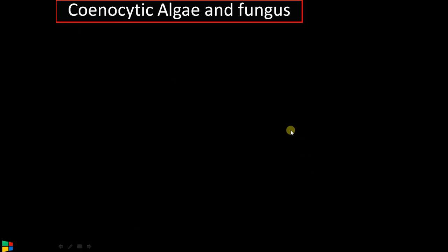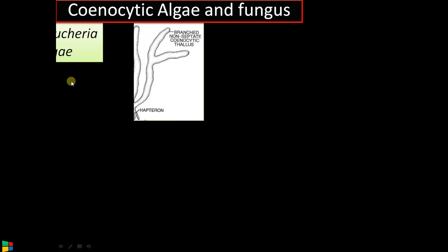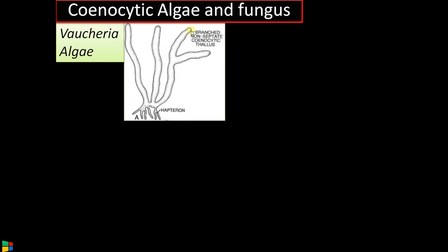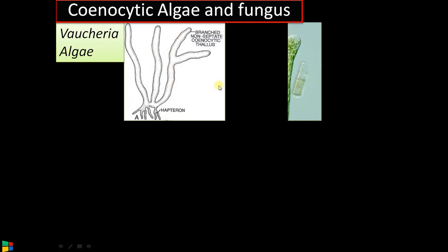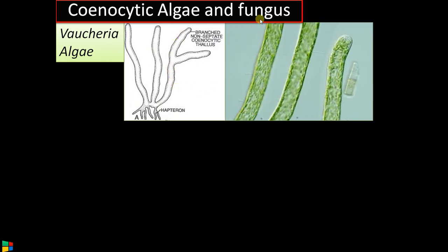We also have higher life forms like syncytial algae, fungus, etc. A classical example is Vaucheria. This is an alga, and as you can see the structure, it is not cellular — it can be called syncytial: a mass of protoplasm with many nuclei but without a cross wall or septum. That condition is called syncytial; it cannot be called cellular.